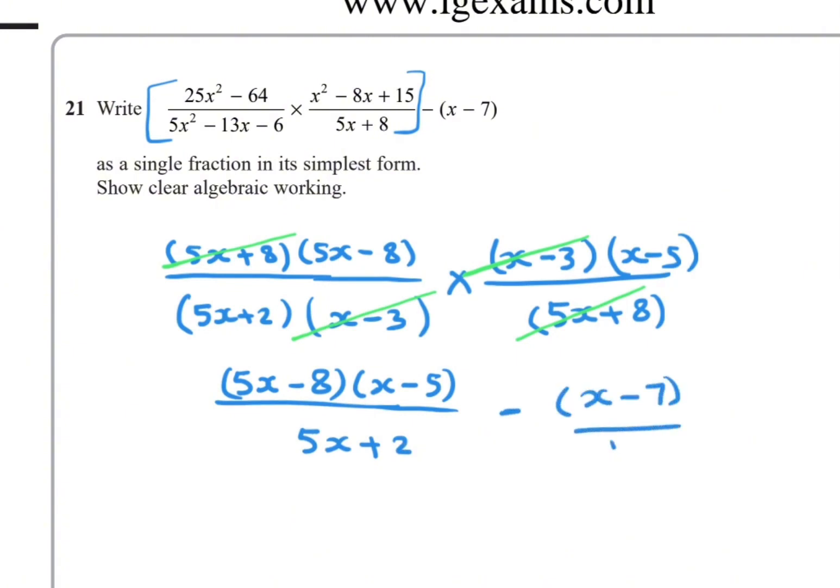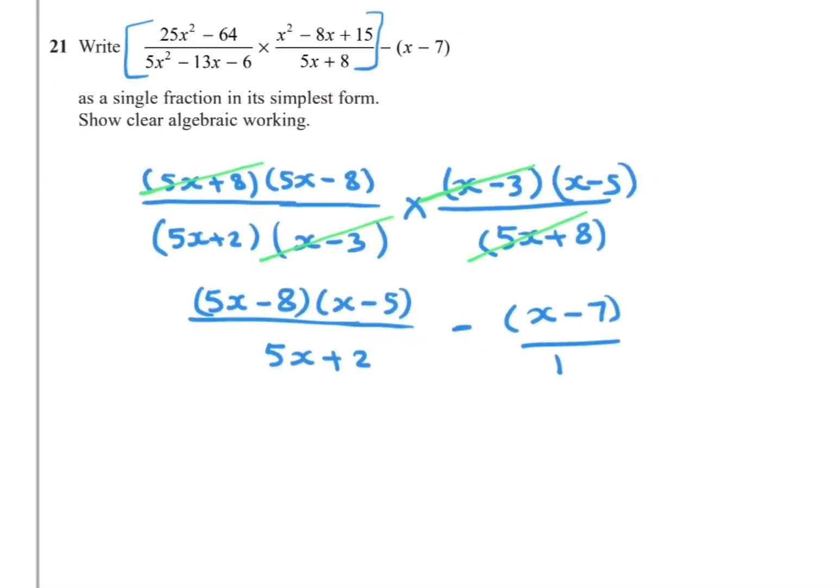This means over 1, so multiply the denominators. The denominator now is 5x + 2. So cross multiply: 1 times (5x - 8)(x - 5) minus (x - 7) times (5x + 2).